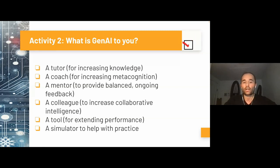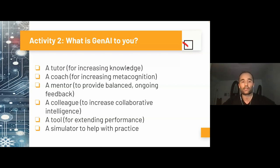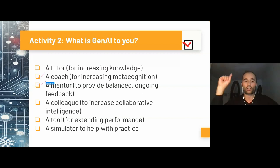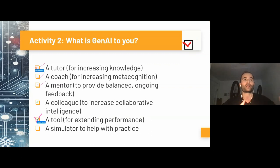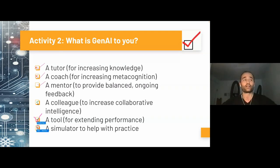For this activity, we're going to use the annotation tool on Zoom. Look on top of your screen for 'View Options' and click it. In the dropdown menu, look for 'Annotation' — it's always a little bit tricky to find. Once you click annotation, a little ribbon opens up. To vote, use the stamp tool — it's easier. You have different options including a checkmark. There's no right or wrong answer and you can vote for more than one. This is a chance to see where you are as a group.